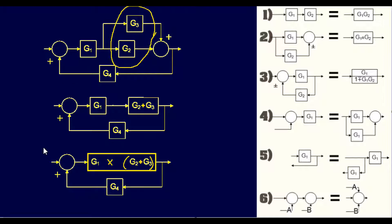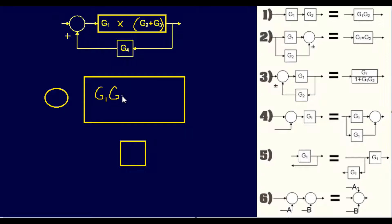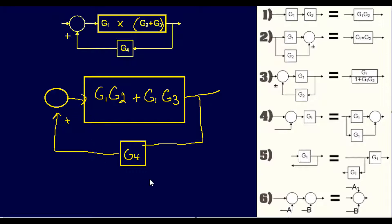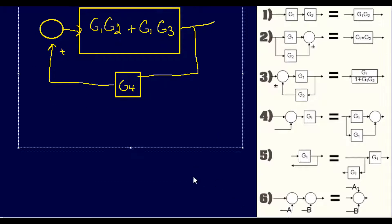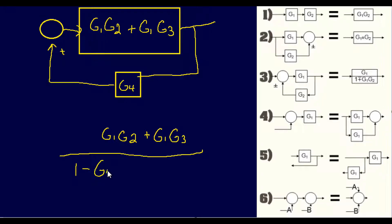If you actually want to write this in correct algebraic form, it looks like G1 times G2 plus G1 times G3, with G4 going as positive feedback. Now we need to simplify this down one more time. This again mimics Rule 3, so it creates a final function: G1 times G2 plus G1 times G3, over — now look at the sign, it's a plus sign, so again we reverse it — 1 minus G4 times the quantity.